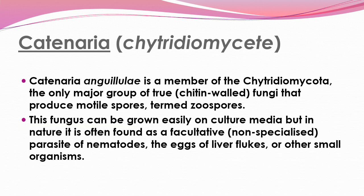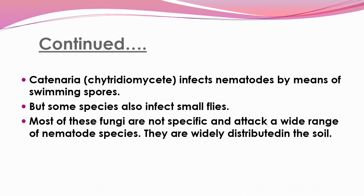It is a type of predator fungi in which the organism has chitin in its cell wall and produces motile spores termed zoospores. This fungus can be grown easily on culture media, but in nature it is often found as a facultative non-specialized parasite of nematodes, eggs of liver flukes, or other small organisms. They infect nematodes by means of swimming spores, but some species also infect small flies. Most of these fungi are not host-specific and attack a wide range of nematode species, and they are widely distributed in the soil.